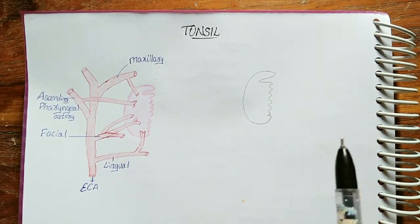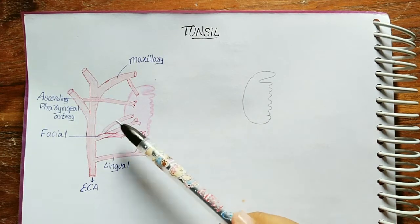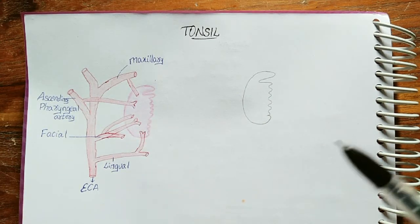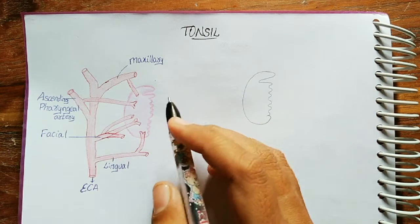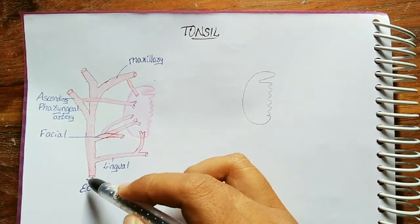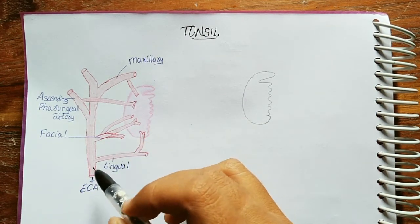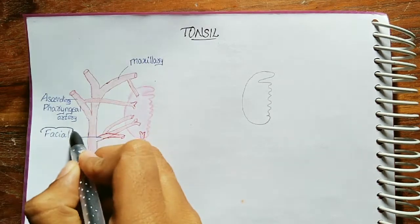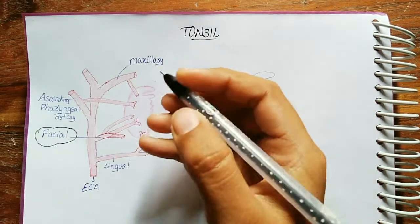Any medico reading about the tonsil should know that arterial supply and bed of tonsils are very important. Coming to arterial supply, it is from the external carotid artery, mainly from the facial artery.